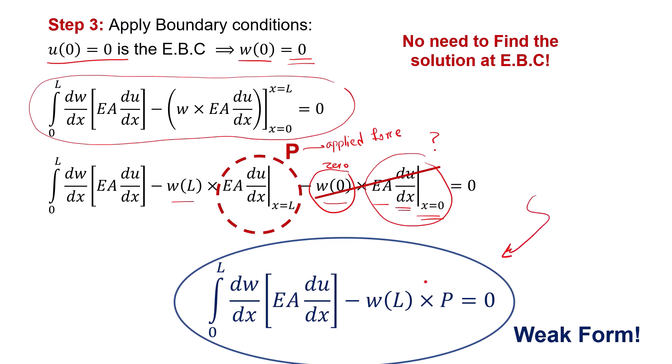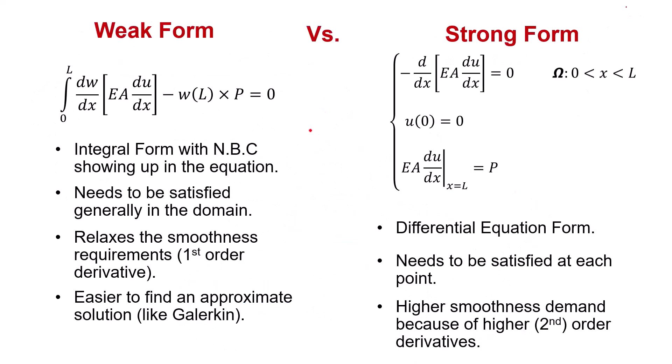This is the weak form of our problem. Now that we have found the weak form, let's take a moment to compare it with the strong form and see the key differences between the two. First, the weak form is written in integral form, and the natural boundary condition, or NBC, appears inside the equation. This is the NBC, and this is the integral form.